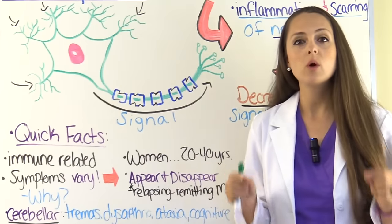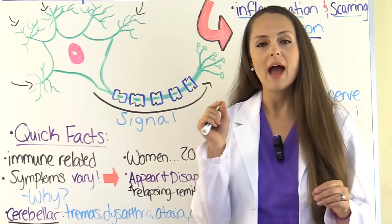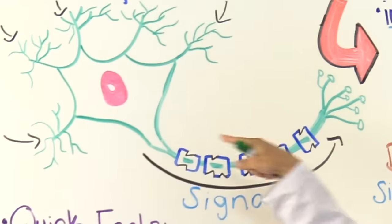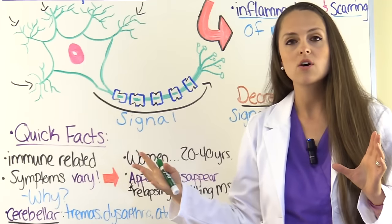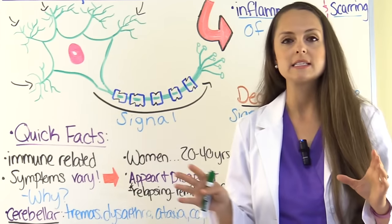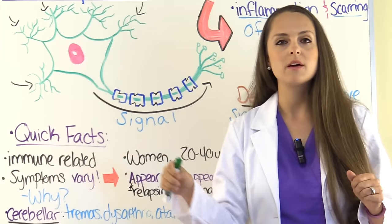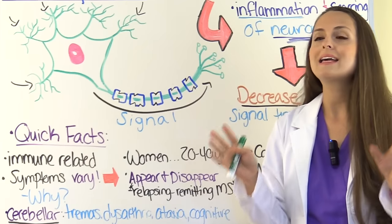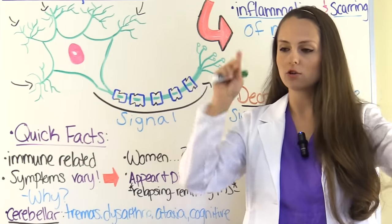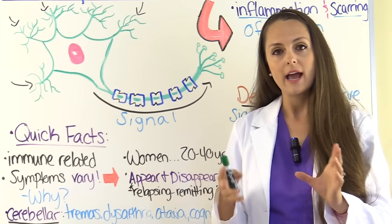Before we dive into the patho, let's talk about some quick facts. MS is immune-related — your immune system cells attack the myelin sheaths of neurons in the central nervous system. The myelin sheath protects the axon, and when it's gone, that axon can't transfer signals correctly. Symptoms vary between patients because different neurons in different locations of the brain and spinal cord can be affected, so you'll see lesions in different areas.